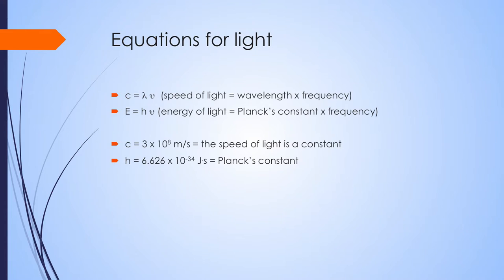The equations for light that are most important are C equals lambda nu, meaning the speed of light equals wavelength times frequency, and E equals h nu, or energy equals Planck's constant times frequency. Both the speed of light and Planck's constant are constant numbers — they don't change in a vacuum.